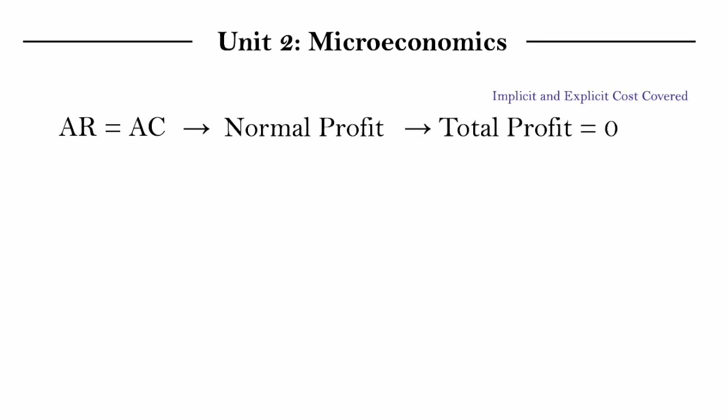And to sum up today's video, when AR is equal to AC, we make normal profit, which is when the total profit is equal to zero, and implicit and explicit costs are covered, thus being able to justify why a firm would continue to operate.